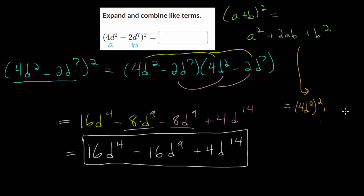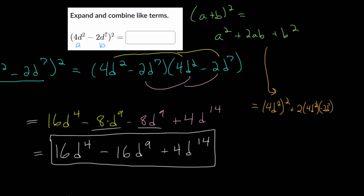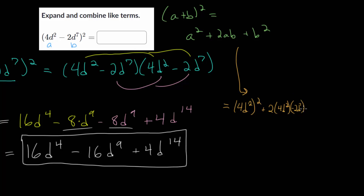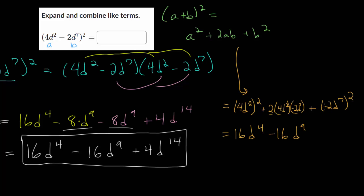Then plus 2 times a, so 4d squared, times b, which is minus 2d to the seventh. And then we have plus b squared, and b we know is minus 2d to the seventh. So now we just simplify. Squaring 4d squared gives us 16d to the fourth. We multiply all the number terms: that's 8 times minus 2, which is minus 16, and d squared times d to the seventh is d to the ninth.